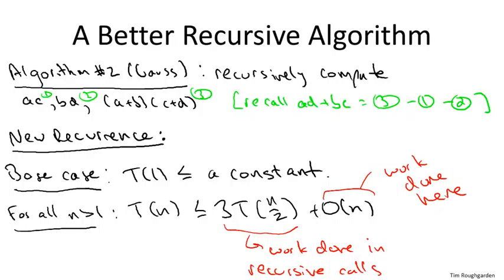Another point of contrast is merge sort. Think about what the recurrence would look like for the merge sort algorithm. It would be almost identical to this one, except instead of a three, we'd have a two. Right, merge sort makes two recursive calls, each on an array of half the size, and outside of the recursive calls it does linear work, namely for the merge subroutine. We know the running time of merge sort, it's n log n. So this algorithm, Gauss's algorithm is going to be worse, but we don't know by how much.